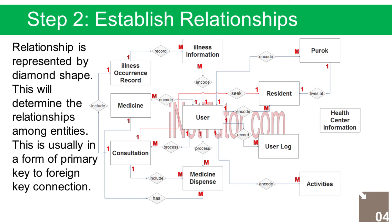Relationship 7: The system also records the dispensing of medicines — a 1 to many relationship. Relationship 8: Every activity of the user in the system will be recorded in the user log — a 1 to many relationship. Relationship 9: A resident seeks consultation — a 1 to 1 relationship. Relationship 10: Consultation includes dispersal of medicine records — a 1 to many relationship.